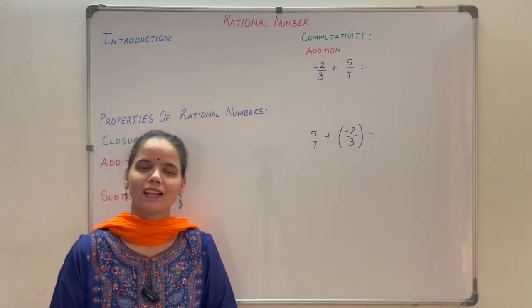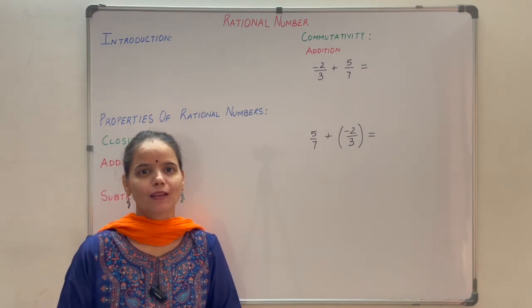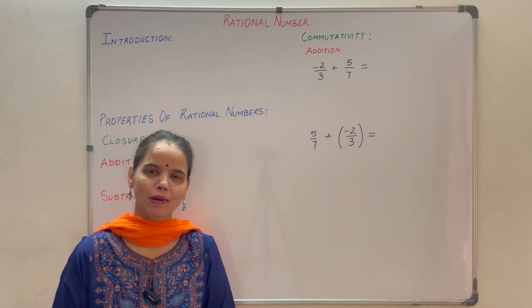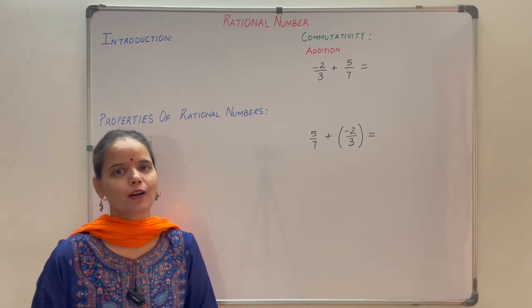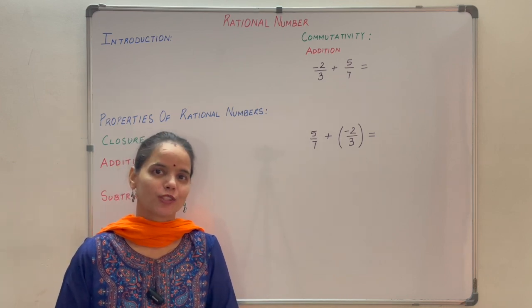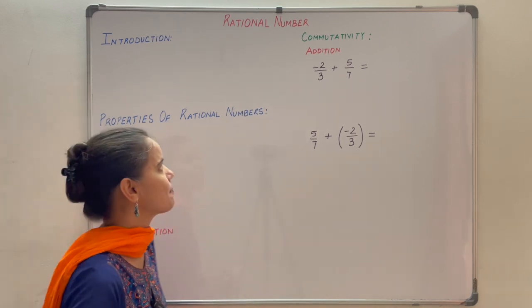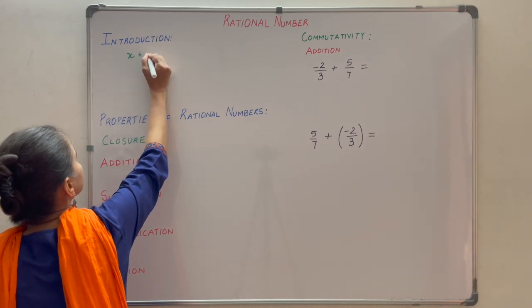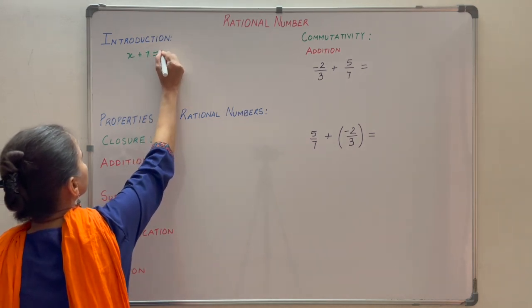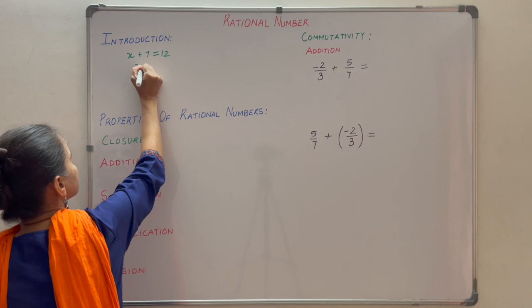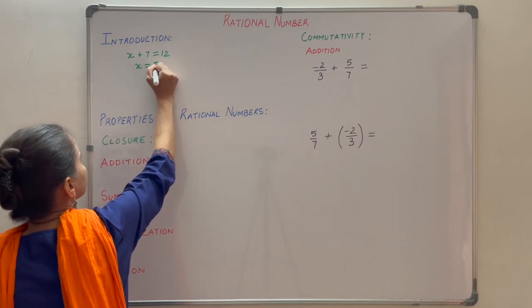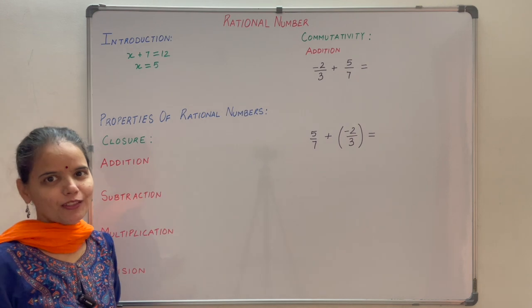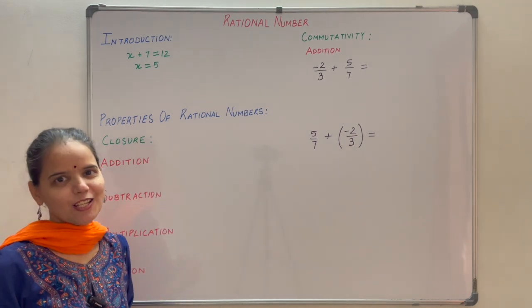Rational numbers. Let us understand what is the need to study rational numbers. In mathematics we frequently come across simple equations which we need to solve. For example, x plus 7 is equal to 12, so x is equal to 5. X equals 5 is the solution of this equation, which is a natural number.